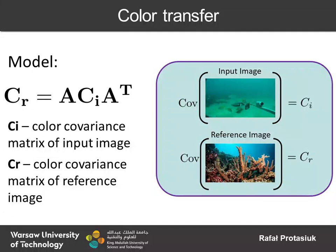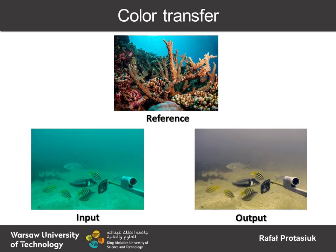Color transfer methods can alter color appearance in the input image by borrowing color statistics from a reference. Such behavior could be modeled through mapping the color covariance matrix from reference to the input. This approach is known to be effective in many contexts. However, since it does not have any constraints on color range, it is not well suited to the spatially variable color casts encountered in underwater scenes and results in unrealistic color distribution.